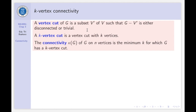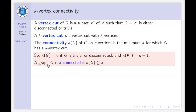A vertex cut of G is a subset V′ such that G minus V′ is either disconnected or trivial. A K-vertex cut is a vertex cut with K vertices. The connectivity of G, denoted κ(G), is the minimum K for which G has a K-vertex cut. So κ(G) equals 0 if G is trivial or disconnected, and κ(Kₙ) is N minus 1 because we need N minus 1 vertices to make the complete graph trivial. A graph G is called K-connected if κ(G) ≥ K.